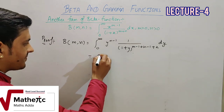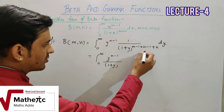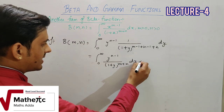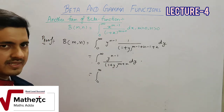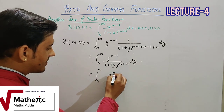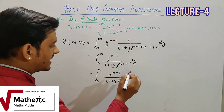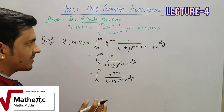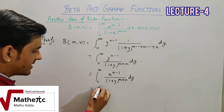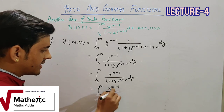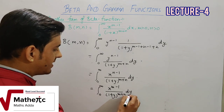Simplify करने पर: ∫₀^∞ y^(n-1)/(1+y)^(m+n) dy। Definite integration की property से variable change करने पर integration में कोई change नहीं आता। Beta function symmetric function होता है, m और n को interchange करने पर कोई change नहीं आता। तो इसे फिर से ∫₀^∞ x^(m-1)/(1+y)^(m+n) dy लिख सकते हैं।